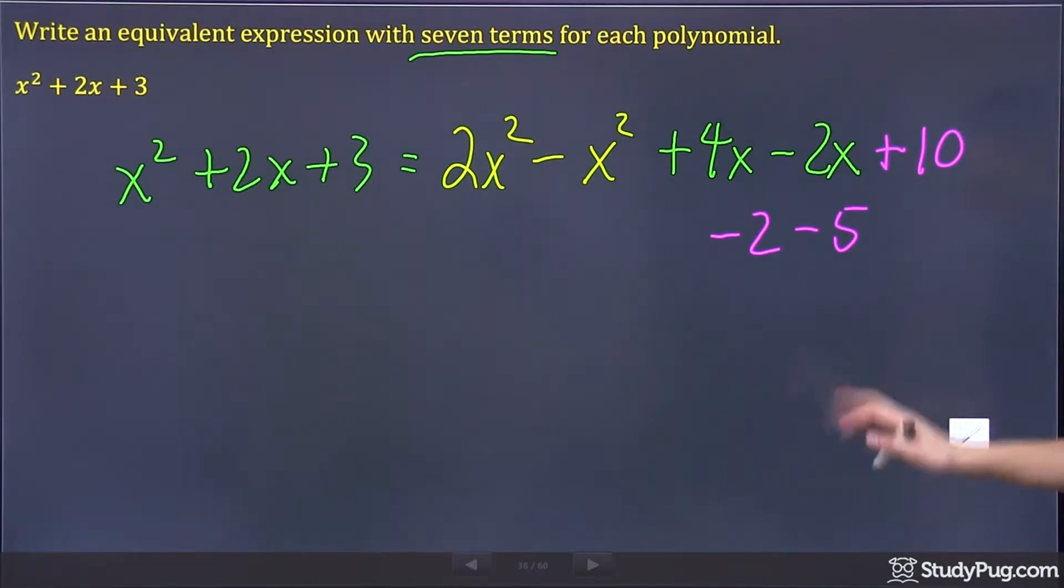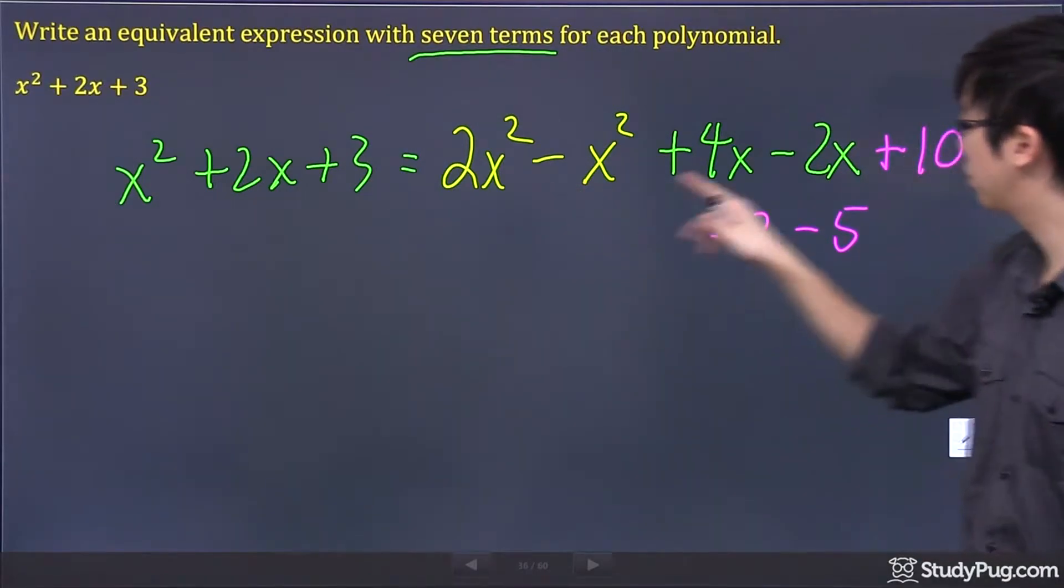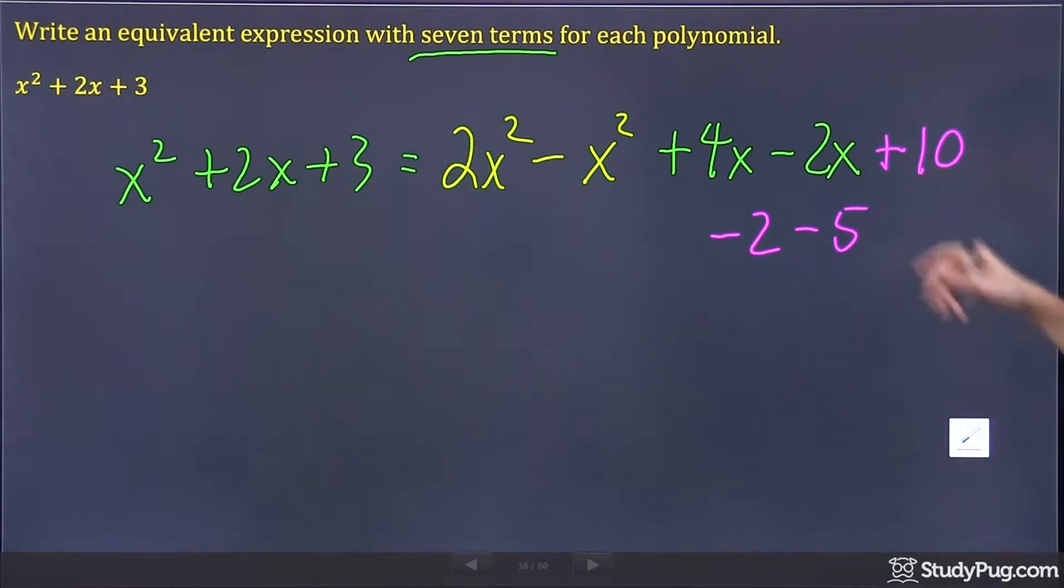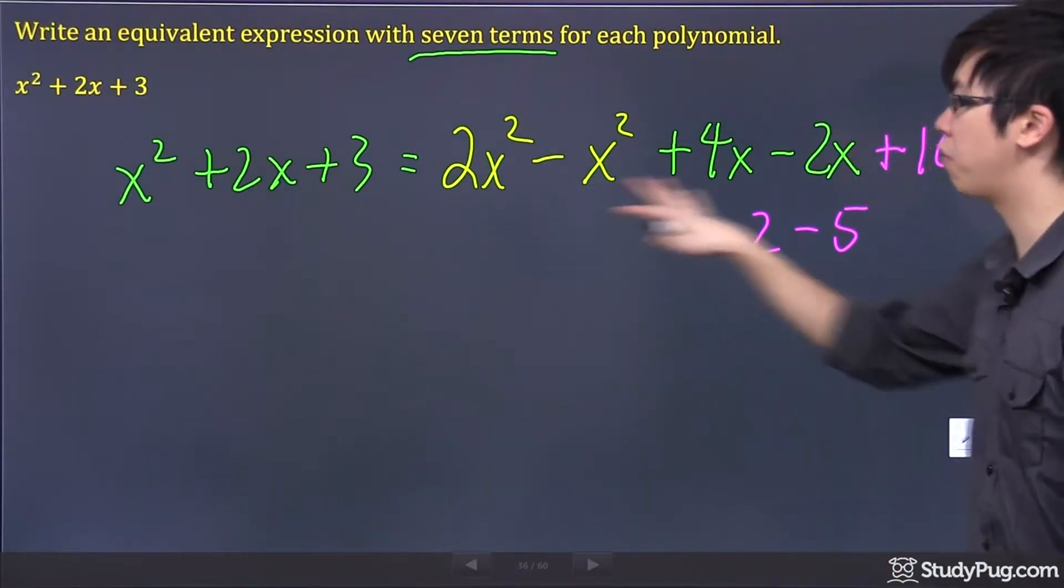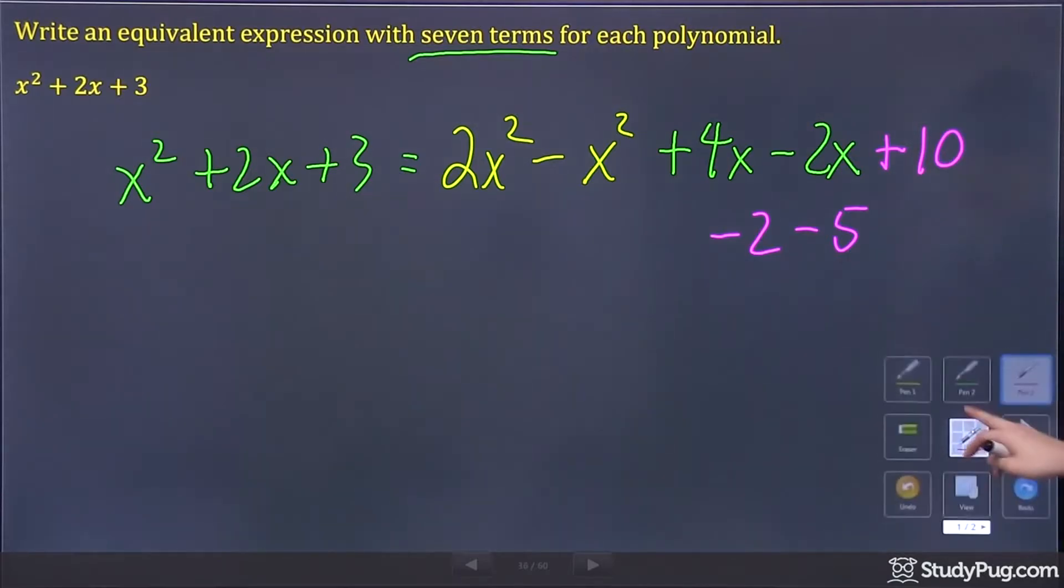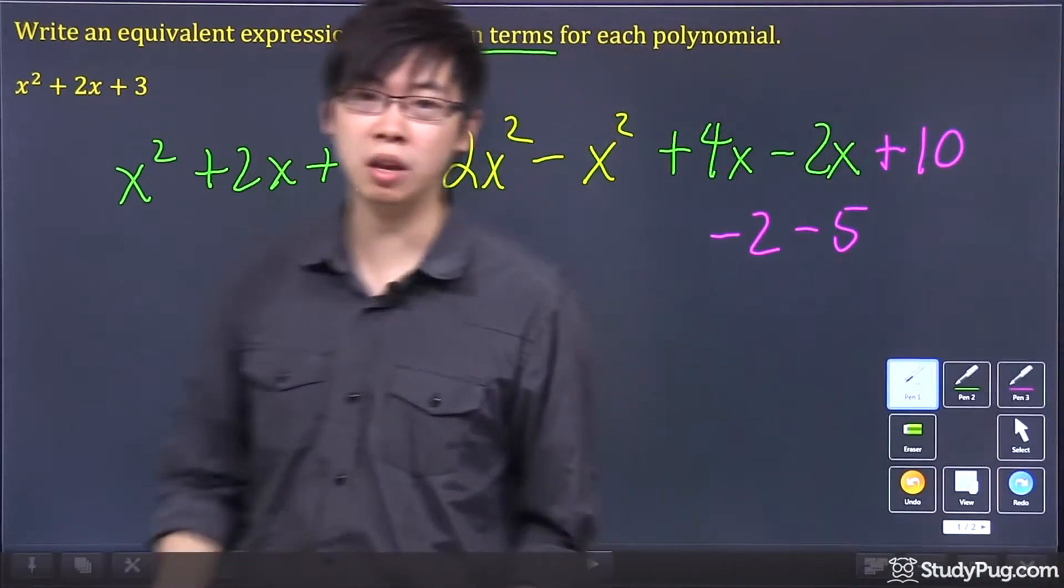So clearly if you just look at the colors, we'll get 2 yellows, 2 greens, and 3 purples. So all together it's 7 terms in total. And if you simplify these guys over here, I can show you, but you probably know the answer anyway.